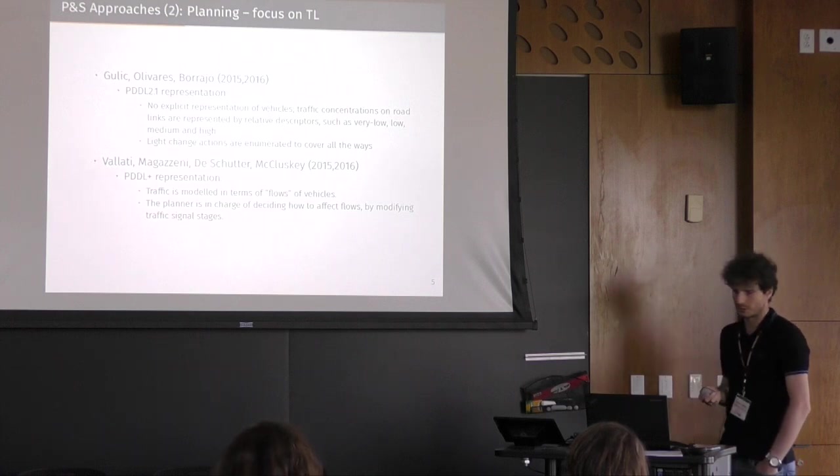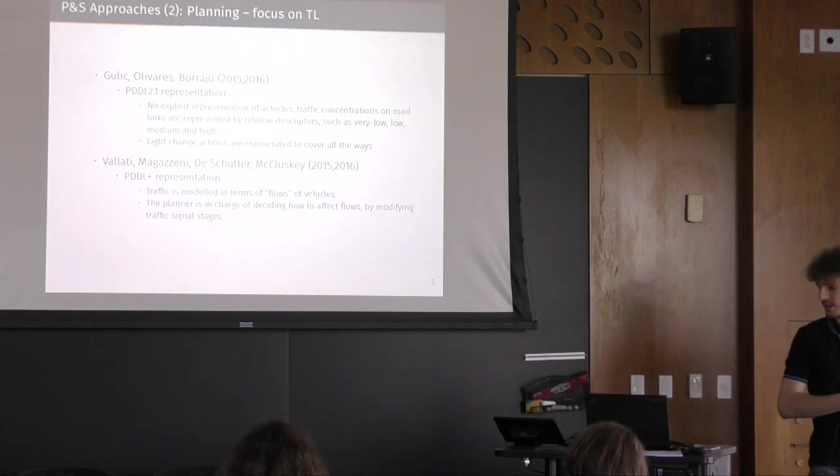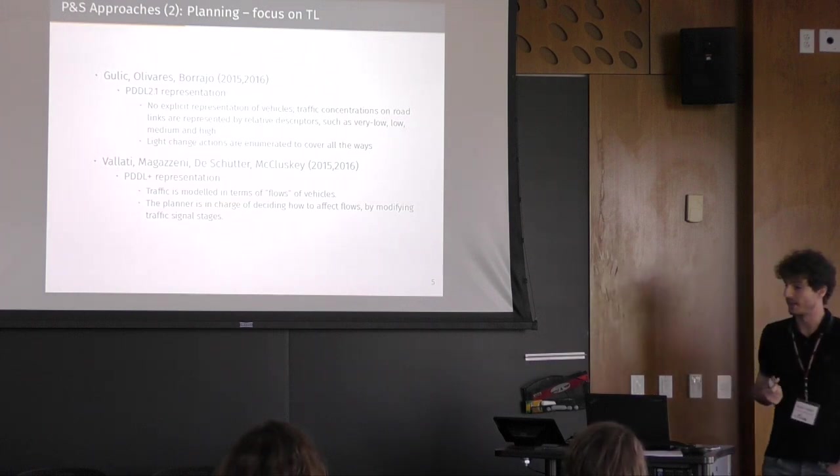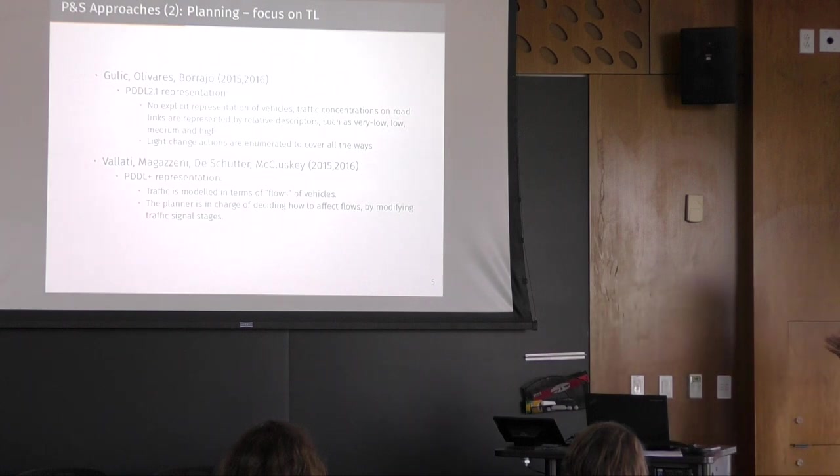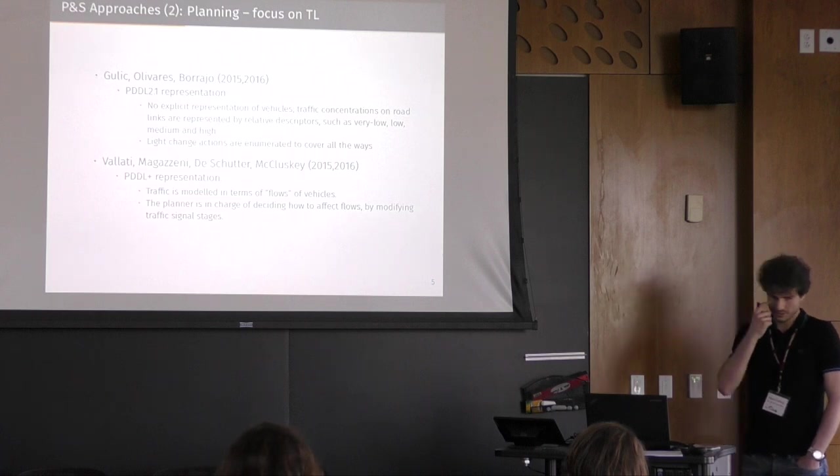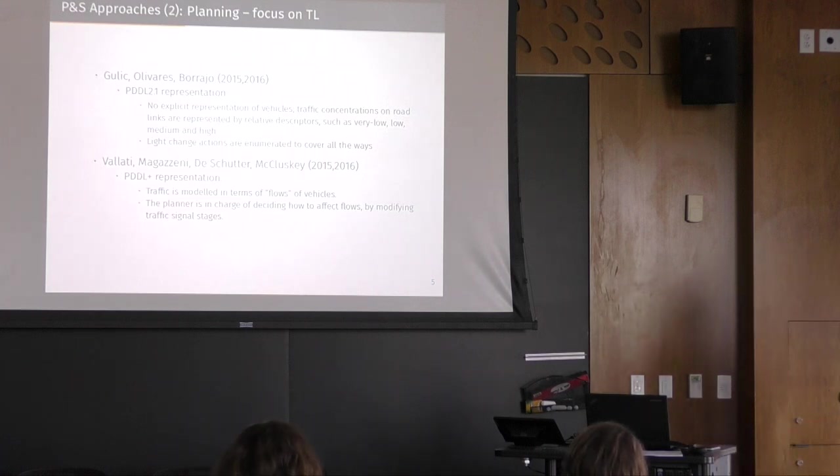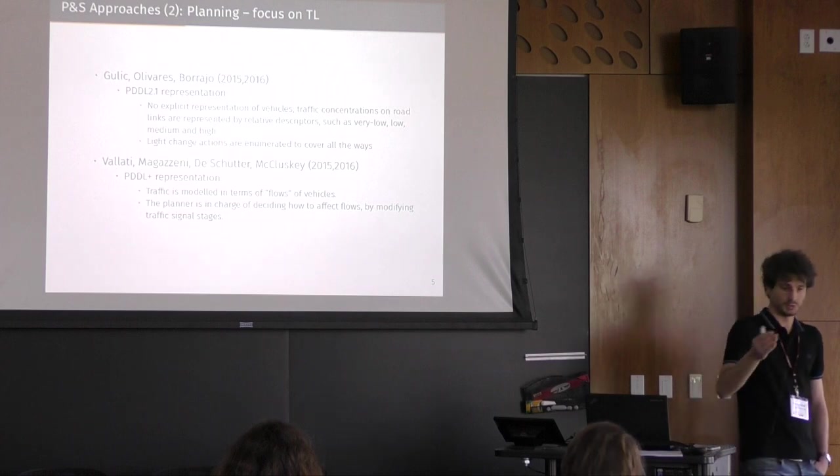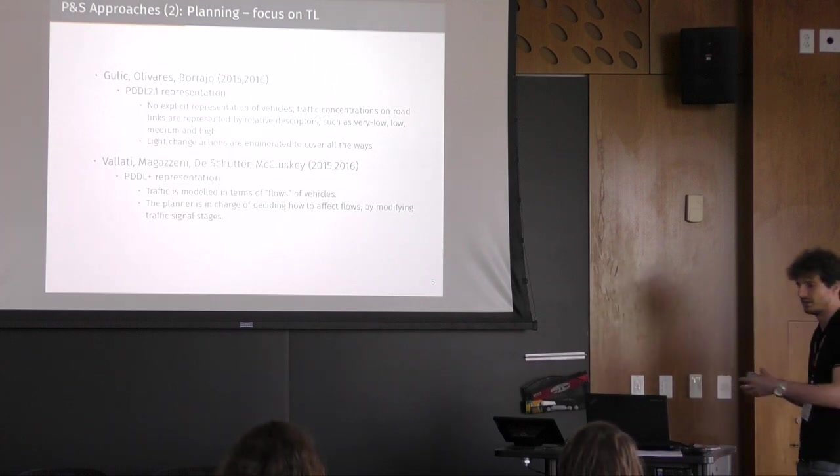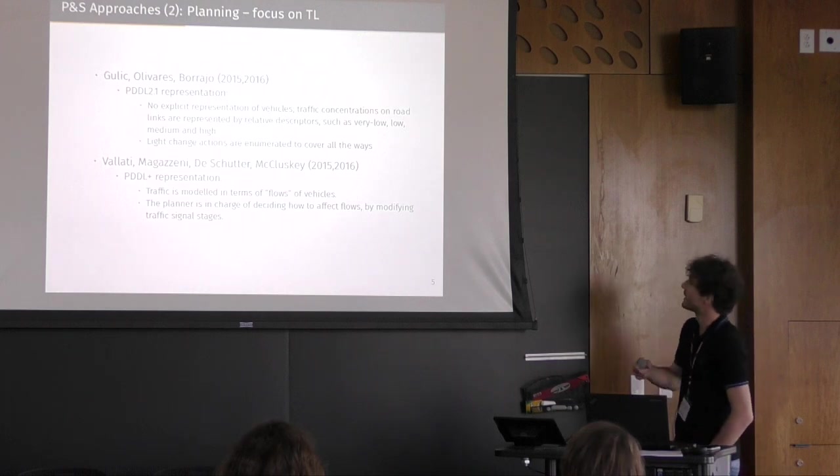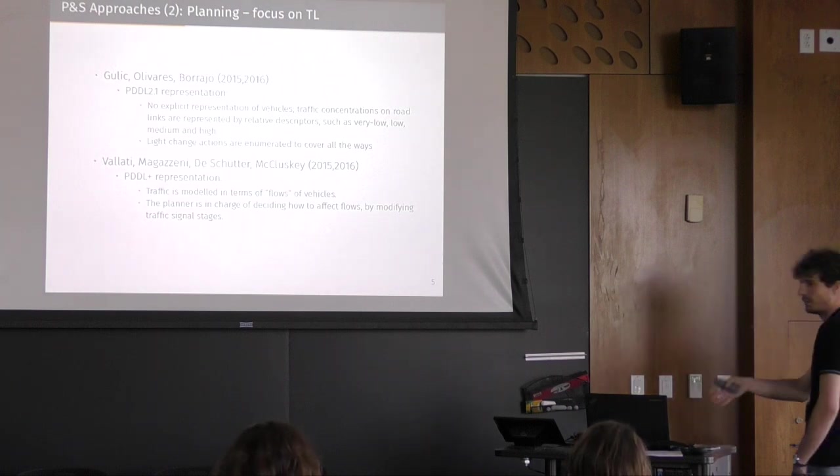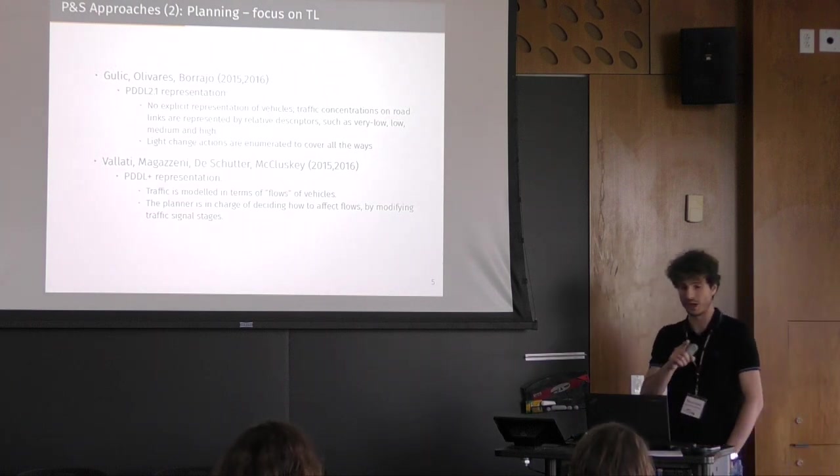And then we have the work which was proposed by myself, Daniela from King's, which is down there, Barbara Schutter from Delft Technical University, which was the traffic expert of the team, and Luay Khalil from the University of Huddersfield. And we decided to go for a PDDL Plus representation. So we decided to represent traffic flows as processes, in which, basically, you are saying that if the traffic is going through a junction from a link to another link, which can be represented as some sort of liquid, basically, in which vehicles are moving via the junction. And the planner is in charge of deciding how to affect these flows by stopping the traffic light in the junction and moving to the next stage.